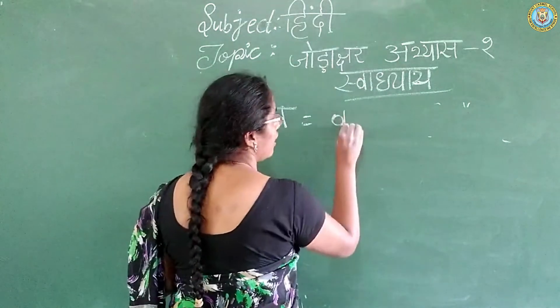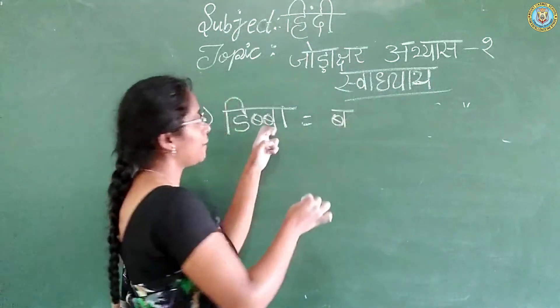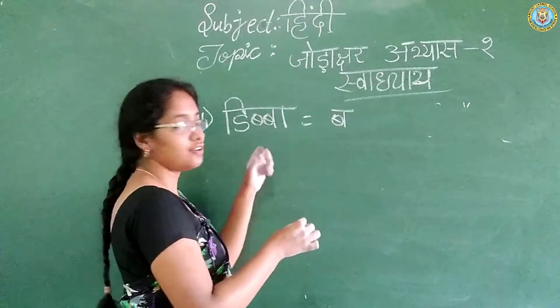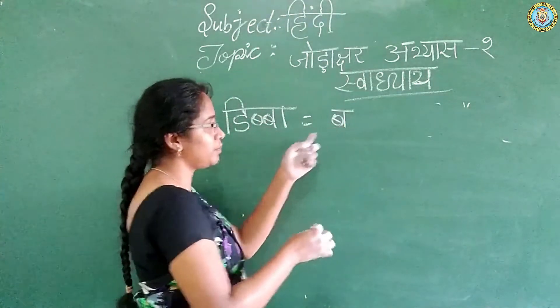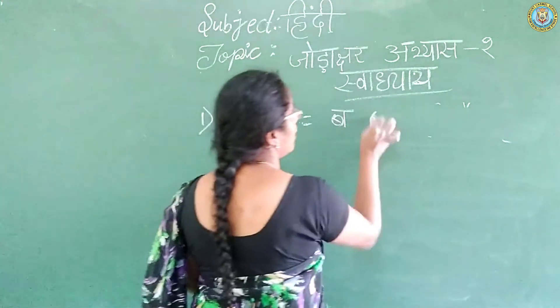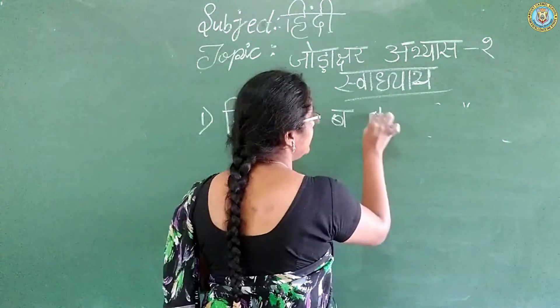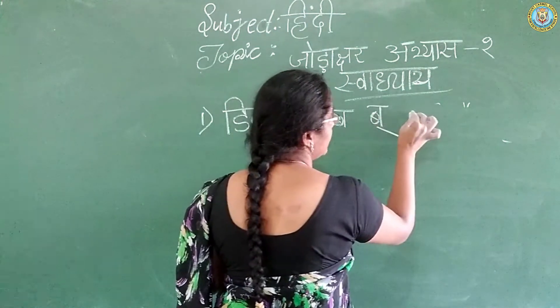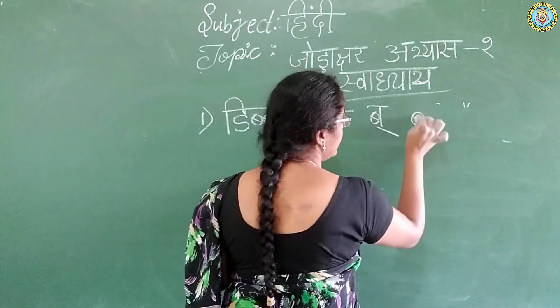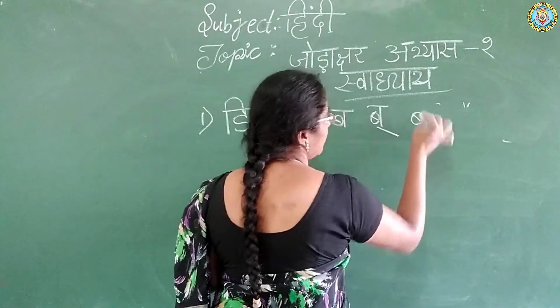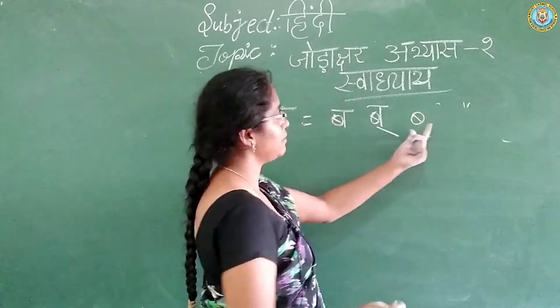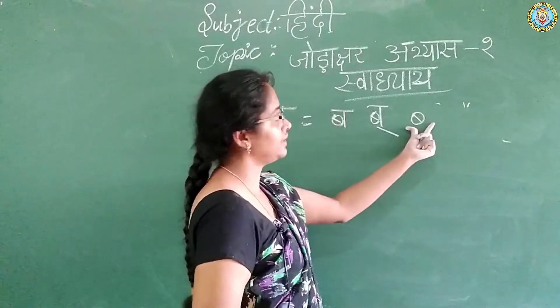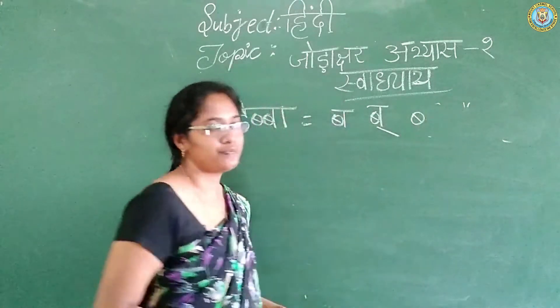How do you write this? Ba Chodakshar. First, you have to put Ba. After that, Alan. And after that, only Ba — Aadha Ba.